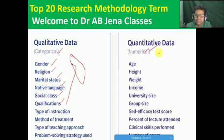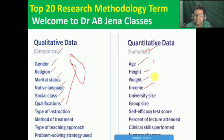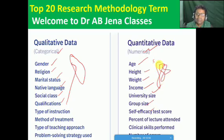What is quantitative data? Quantitative data is information or facts expressed in numerical value — it can be counted, measured, and analyzed statistically. Quantitative data answers how many, how much and how often questions. It provides measurable facts like percentages, counts or physical measurements such as temperature and height. Examples of quantitative data include age (5, 10, 15 years), height, weight (50, 70, 80 kg), income (5,000 or 50,000 or 1 lakh), group size, self-efficacy, and test scores.